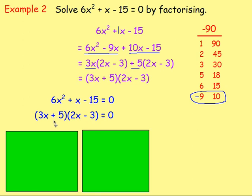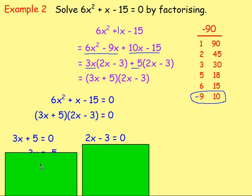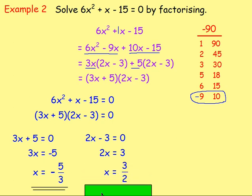From there, once it's factorized, you know that in order to multiply to get zero, either that would equal zero or that would equal zero. Solving each of these equations then. 3x would equal negative 5. X would equal negative 5 over 3. And if you solve this one, add 3 to both sides. Divide by 2. X would equal 3 over 2. So you're getting your two answers. So that is how you'd solve it by factorizing.